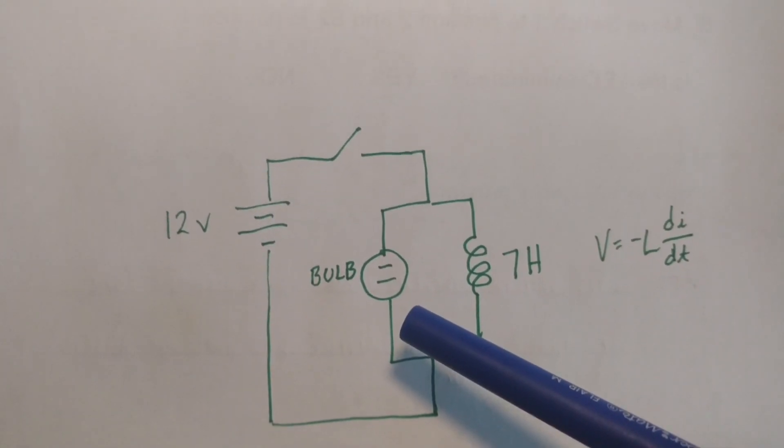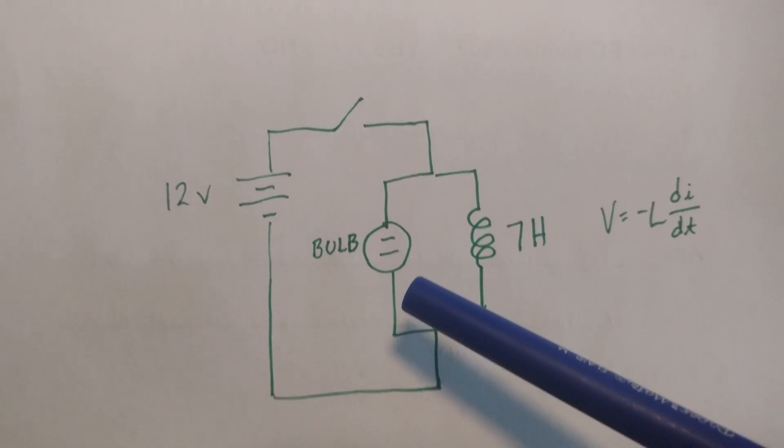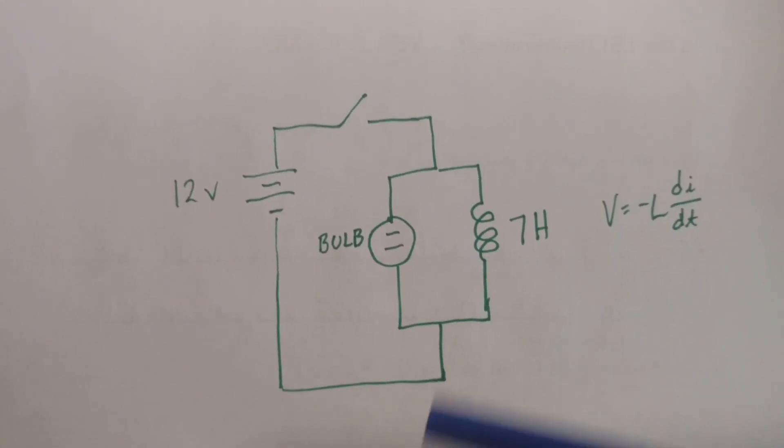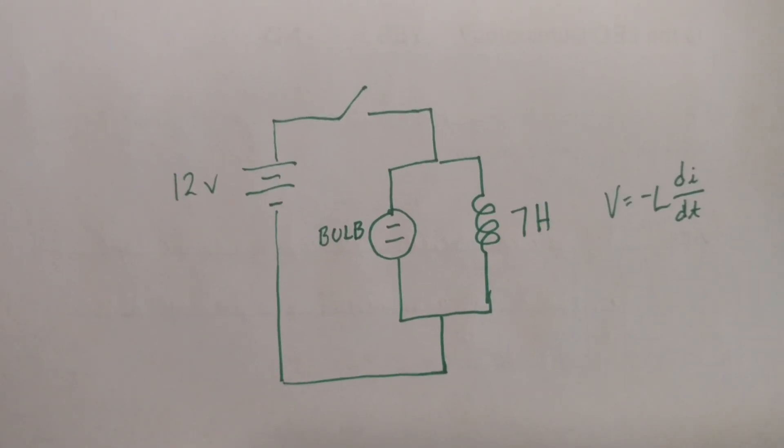Now I don't expect this bulb to turn on because this bulb requires about 70 volts. However when I open the switch back up something peculiar happens. Let's take a look at the circuit.